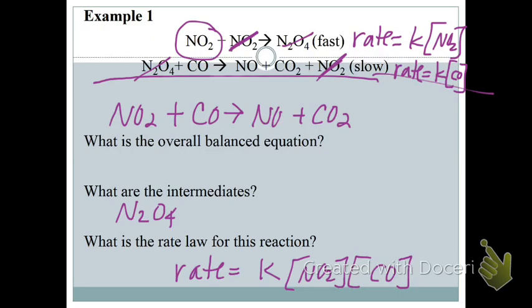If they told you which step is fast and which is slow, they probably determined it experimentally. In pre-AP, most of the time you'll be given which step is the slow step, or given a rate law to figure it out. In AP, they'll give you a rate law and a series of steps and ask which is the rate determining step or the correct mechanism. We're doing kinetics light — though we added rate laws and reaction mechanisms this year.